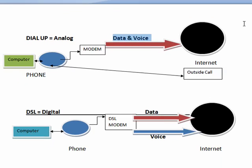Bear in mind that I am not a graphic artist, and I did the best that I could. Just to give you an idea of how DSL differs from dial-up — dial-up essentially equals analog. So here you have your computer, it's connected to the phone, and that would go into a modem. Modem stands for modulate, demodulate. So it would take analog data, convert it to digital, and send it out through the phone lines that were carrying data and voice to the internet.